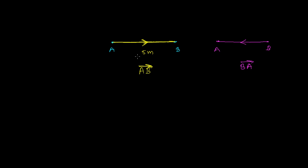You just write from where to where you moved and give the direction. This is for displacement, but if you are applying force, then you write 'force' and just give an arrowhead. You are giving the direction — this is just a symbolical representation.